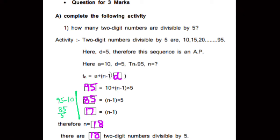Here, D is equal to 5 — that means the common difference, T2 minus T1, which is 15 minus 10. D equals 5. Therefore, this sequence is an AP because every number has a common difference of 5 added to get the next number. The common difference is 5, so it is an AP.